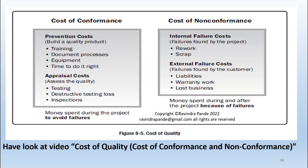There are also costs of non-conformance. When you run testing cycles, some bugs are found that must be rectified before delivery. All reworks are included, and even scrap — for example, if you are manufacturing a pen and some rework costs are beyond recovery, you scrap the product. The manufacturing cost of scrap product is included in the cost of quality. Then external failure costs like liabilities, warranty work, and lost business are also added — these are efforts spent during and after the project because of failures.